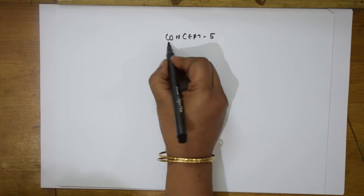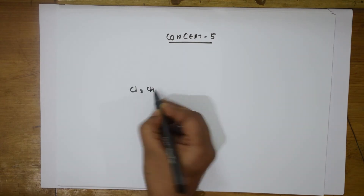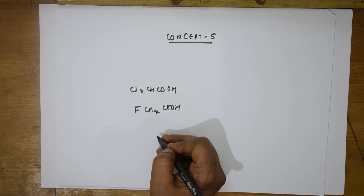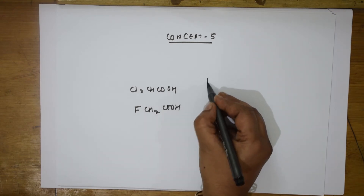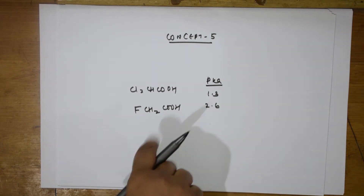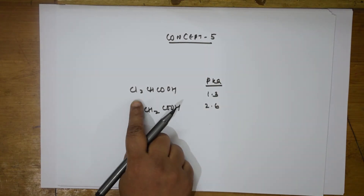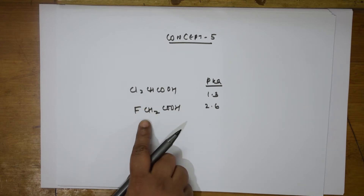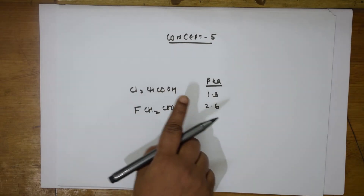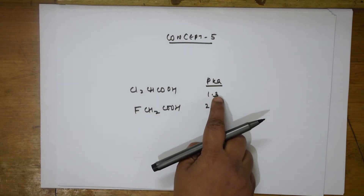Now Concept 5: suppose I have two compounds — Cl2CHCOOH and FCH2COOH. The pKa value for Cl2CHCOOH is 1.3 and for FCH2COOH it is 2.6. Which is more acidic? If pKa values are not given, remember: two chlorine atoms have more electron withdrawing power than a single fluorine atom. More electron withdrawing groups means more acidity. Smaller pKa means stronger acid — and 1.3 is half of 2.6.